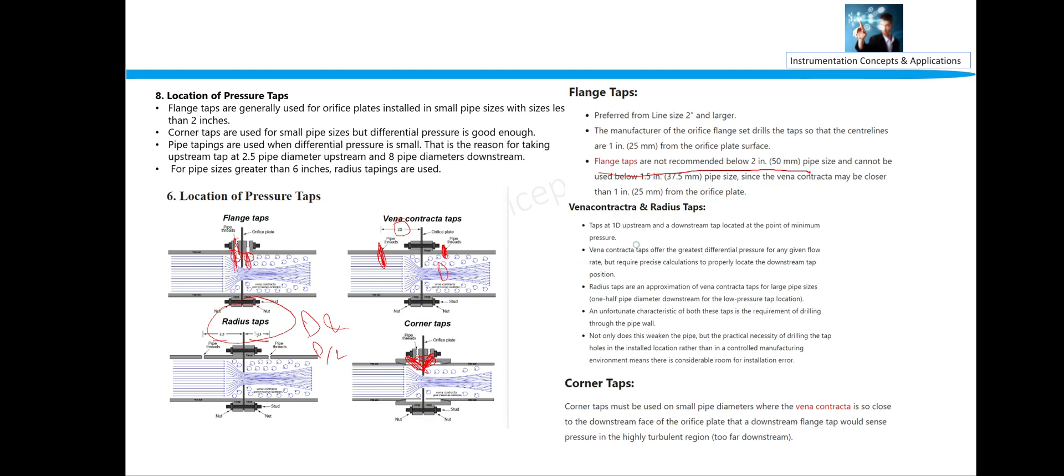Vena contracta and radius tap: these taps are 1D upstream and downstream tap located at the point of minimum pressure, that is the vena contracta pressure. Right.